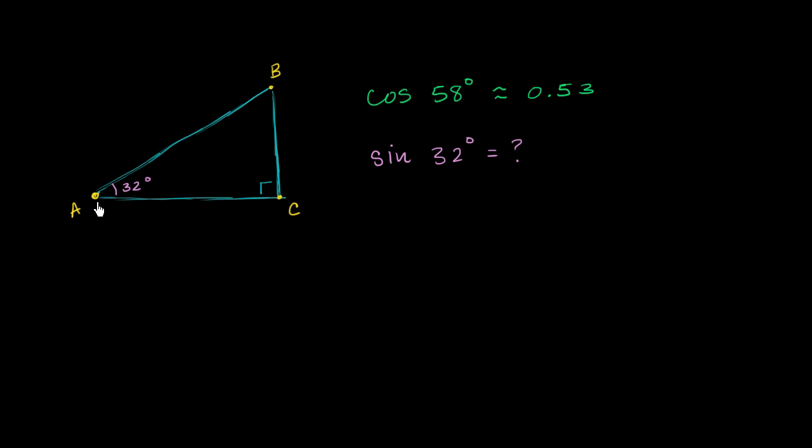So we know that the sum of the angles of a triangle add up to 180. Now in a right triangle, one of the angles is 90 degrees. So that means that the other two must add up to 90. These two add up to 90 plus another 90 is going to be 180 degrees. Or another way to think about it is that the other two non-right angles are going to be complementary.